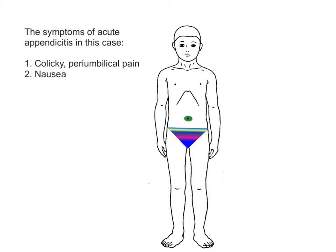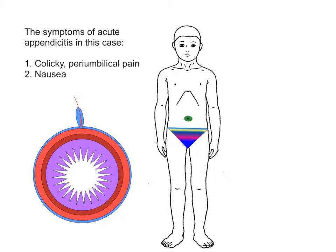Let's now look at the initial symptoms in this case, namely the colicky pain around the umbilicus and the nausea. Appendicitis is associated with obstruction of the appendix lumen that communicates with the cecum. Whatever the cause of the obstruction, this ultimately leads to an inflammatory process affecting the wall of the appendix.